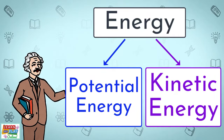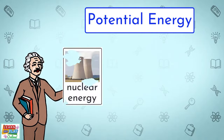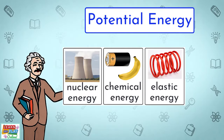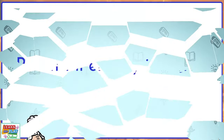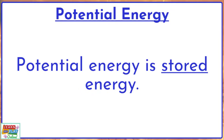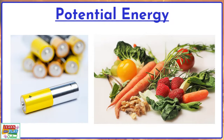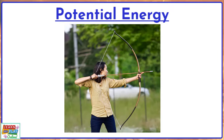In this video, we will be exploring the forms of potential energy, which include nuclear energy, chemical energy, elastic energy, and gravitational potential energy. Potential energy is stored energy. The energy could be stored within the object, just like the chemicals in batteries and food sources, or it could be stored energy based on the position of an object, just like the position of the arrow in the picture below.